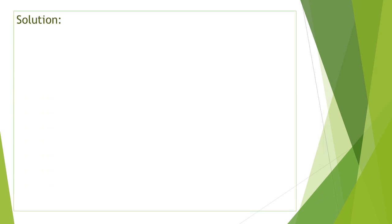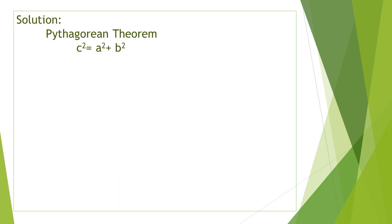For our solution, remember that the Pythagorean theorem has a formula of c squared equals a squared plus b squared, where c is the hypotenuse and a and b are the legs. From our problem, looking at the illustration: our c is x plus 1, our a is x, and our b is 9. So our equation will be x plus 1 squared equals x squared plus 9 squared.